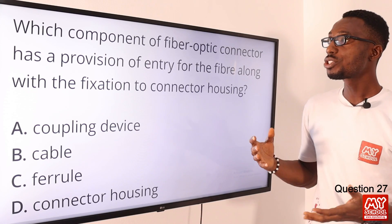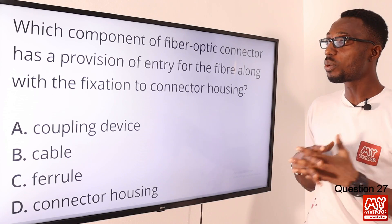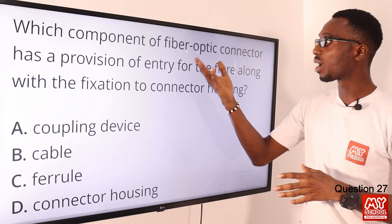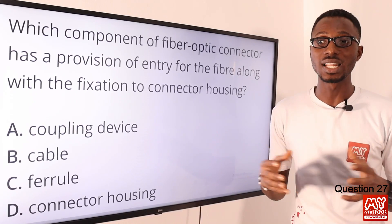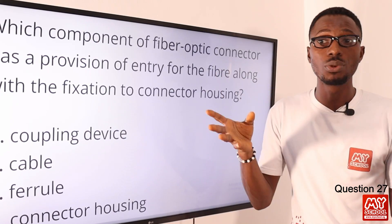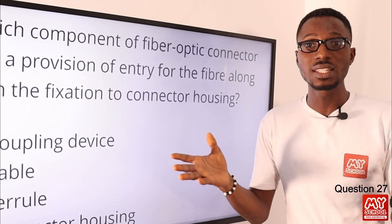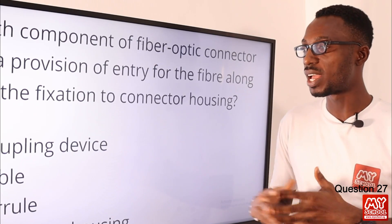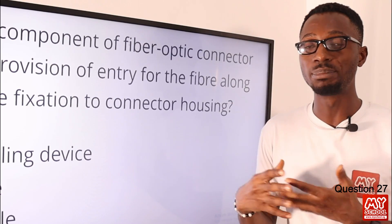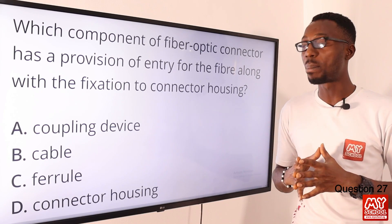Question 27. Which component of a fiber optic connector has a provision of entry for the fiber along with fixation to the connector housing? We are looking at a coupling device — a fiber optic coupler. It is an optical device that can merge one or two inputs into a single output, or split a single input into two or more outputs — referred to as a combiner or splitter. The correct option is option A for coupling devices.